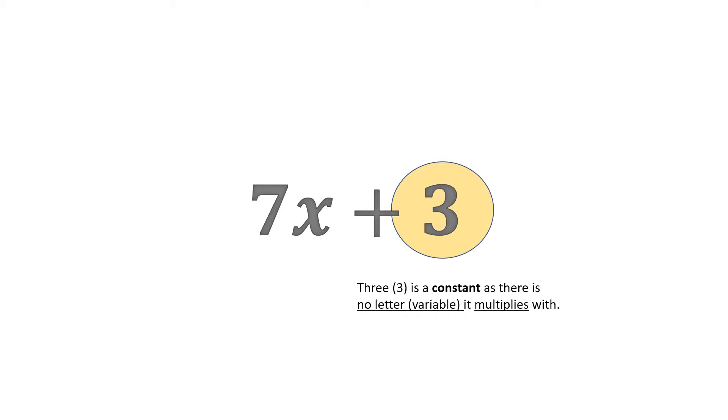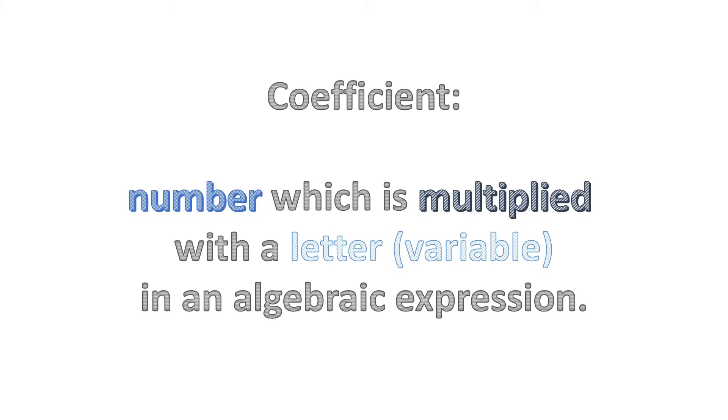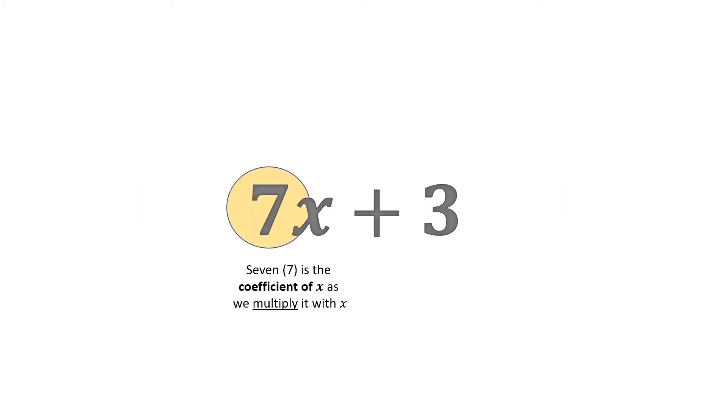Coefficient says that the number which is multiplied with a letter or a variable in an algebraic expression. Now we say that 7x, the 7 is the coefficient of x, as we multiplied with x, while 3 is only seen as a constant.